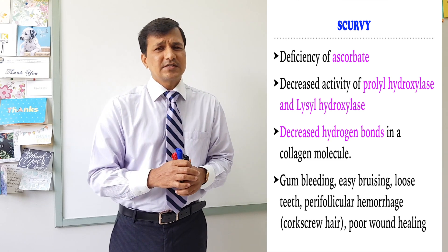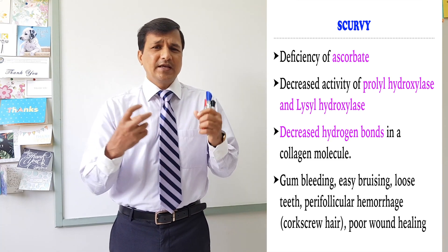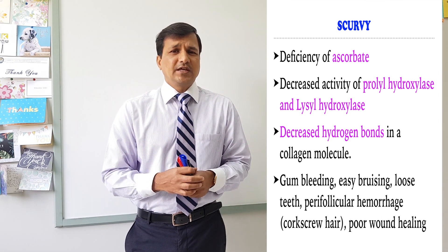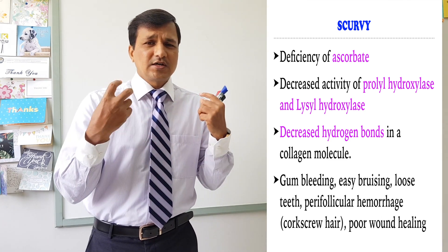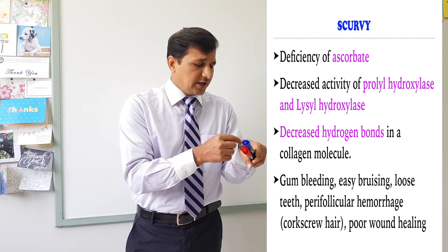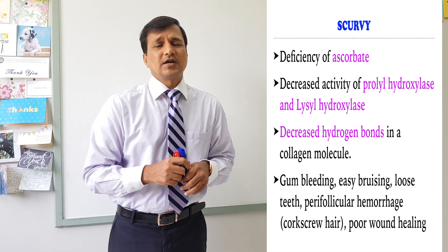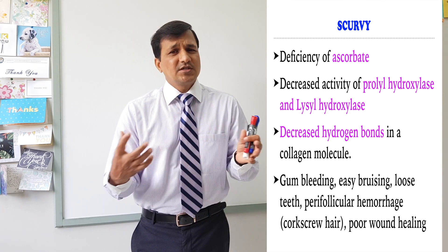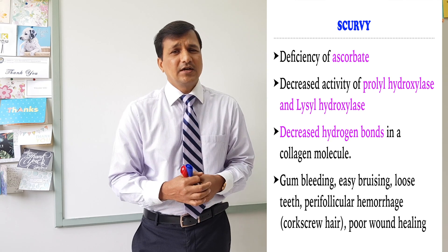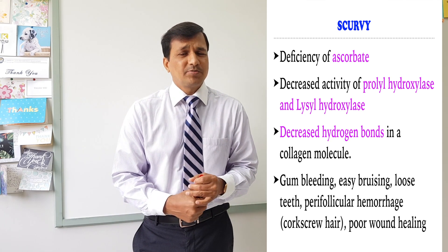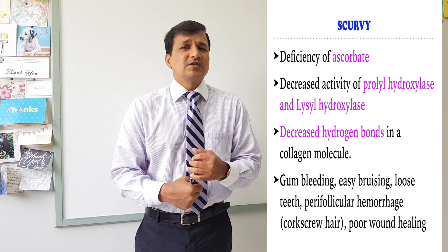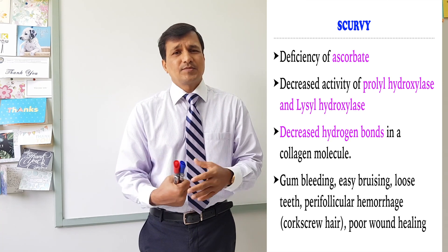The signs and symptoms of scurvy include loose gums and bleeding gums because blood vessels are not properly made, which can also lead to loss of teeth and gum swelling. There can be bleeding beneath the hair follicle — perifollicular hemorrhages — and small hemorrhages beneath the skin, seen as petechiae. Hemorrhages can also occur in joint spaces. Poor wound healing is also present because of improper collagen formation.